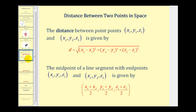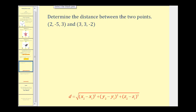Two other things to cover: the distance formula and the midpoint formula in 3D. The 3D distance formula is just an extension of the 2D version — the x and y parts are exactly the same, and we simply add the z component. Similarly, the midpoint formula requires three coordinates — we add the corresponding x, y, and z coordinates and divide each by two.